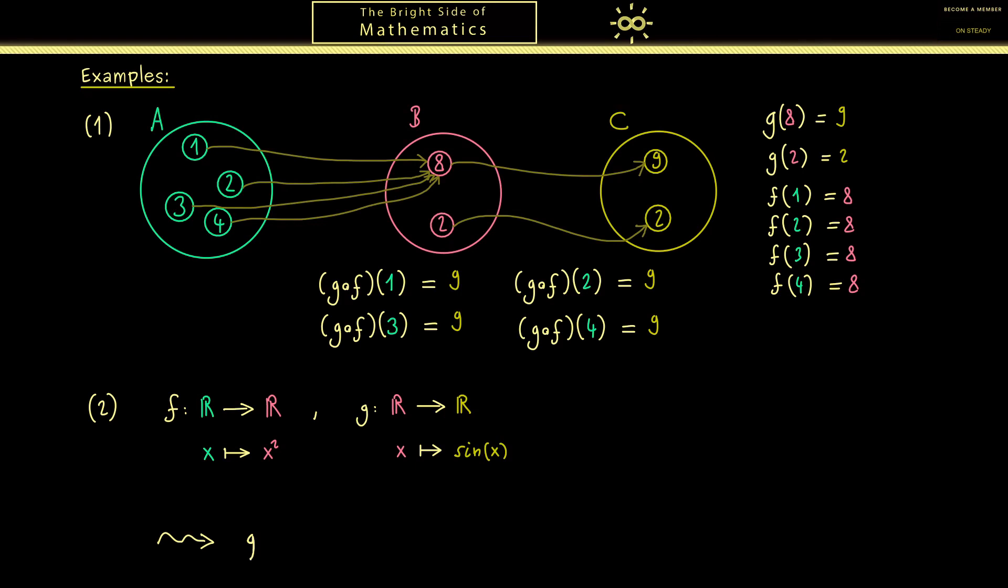Then the composition G after F makes sense. And it is given for point x as x squared inside the sine function. We first square the number and then we apply the sine function.